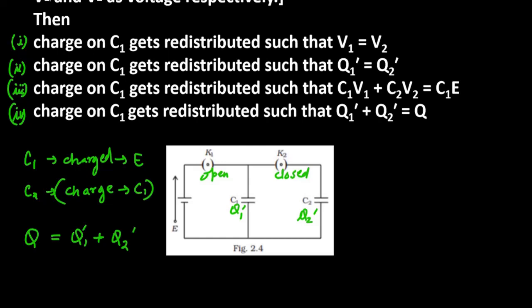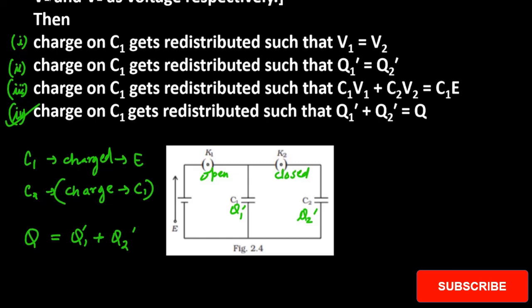How much total charge is conserved? Yes, it will be the sum of these, so the fourth option is correct. Now let's take a look at the first one: the charge on C1 gets redistributed such that V1 is equal to V2. Yes, potential will be equal because they are in parallel, so potential is the same. So V1 equals V2, and the first condition is correct as well. This is the answer for question number 11. Thank you for watching, have a great day.